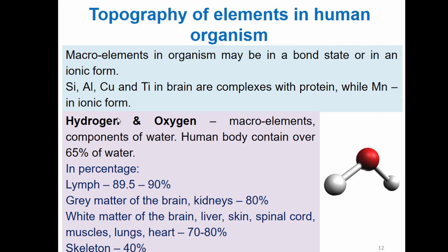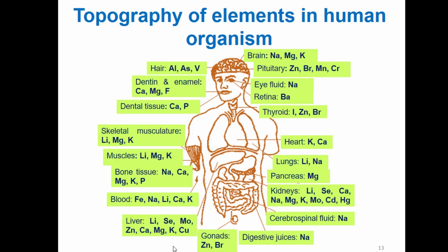Hydrogen and oxygen are components of water. As we all know, the human body contains over 65% water. Water in percentage is found in: lymph up to 90%, gray matter of the brain and kidneys up to 80%, white matter of the brain, liver, skin, spinal cord, muscles, lungs, and heart up to 80%, and even in the skeleton you find up to 40% of water.